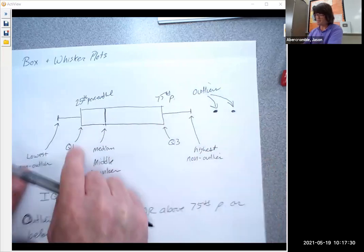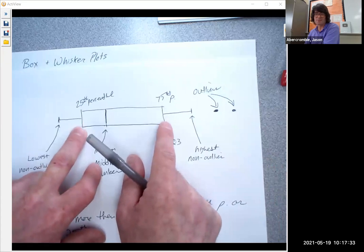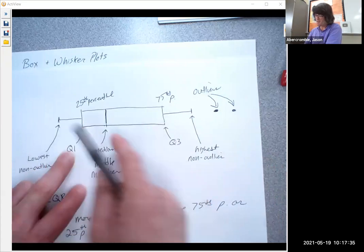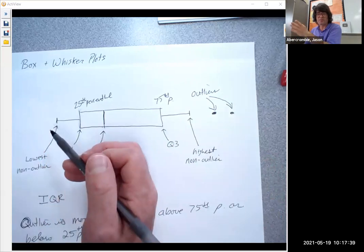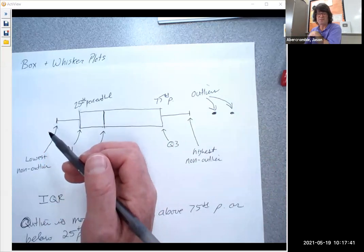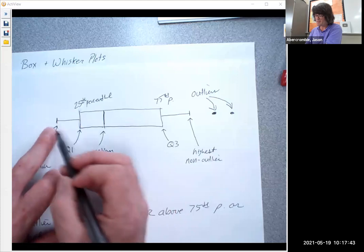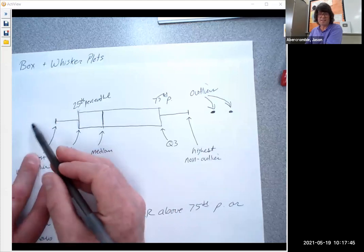And same thing over here, you take the span here, if this is 20, and you multiply it by 1.5, that's 30, and subtract it from whatever this is, that gives you the cutoff for what an outlier is to the left. And if it's not an outlier, it gets a whisker. If it is an outlier, it gets a dot.